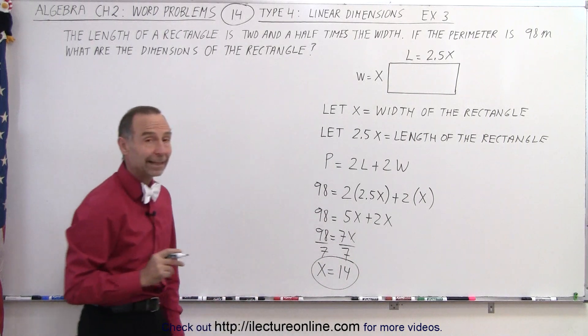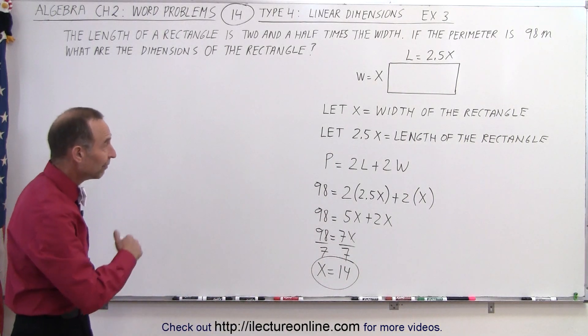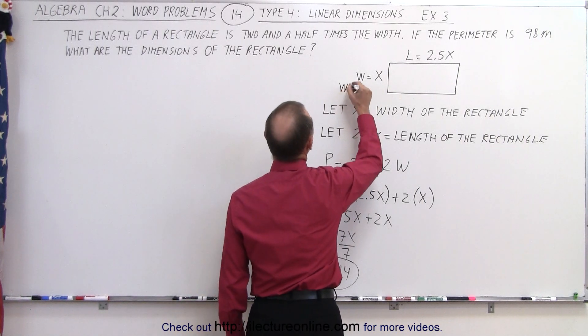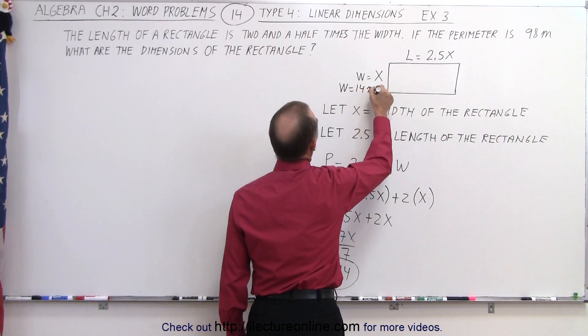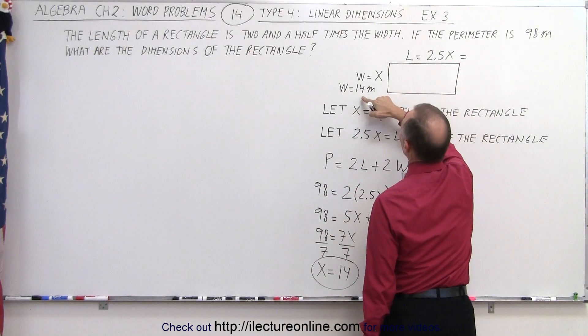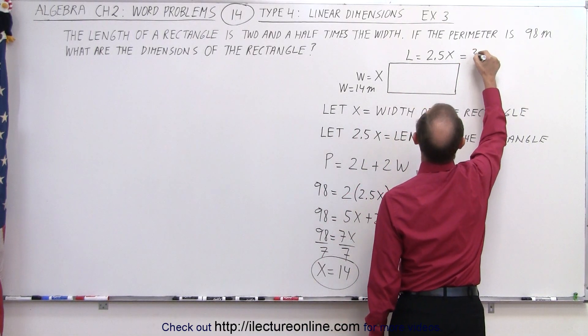So if x is equal to 14, that means the width is equal to 14 meters. And the length, which is 2.5 times as much, that would be 2 times that is 28, plus another half, that would be 35 meters.